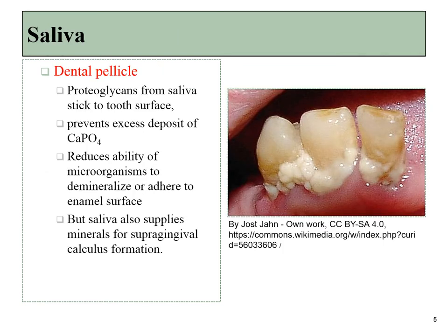The minerals found within saliva can stay in the saliva, giving it a salty flavor, or they can precipitate out of solution onto the surface of the teeth, creating calculus. This can be a problem because it makes the surface of the enamel bumpier, which allows bacteria to adhere to the surface more easily and resist being washed down into the stomach by saliva. This is, of course, one place where the dental hygienist comes into play, ensuring that the surface of the enamel is smooth.